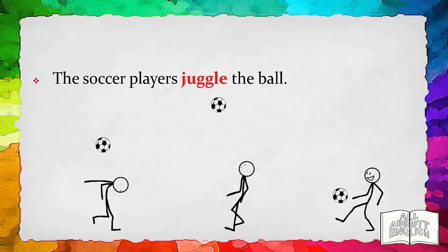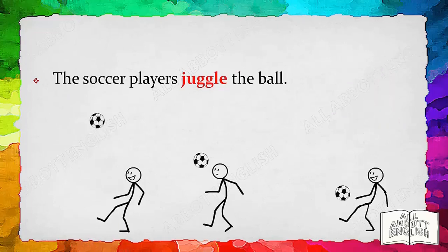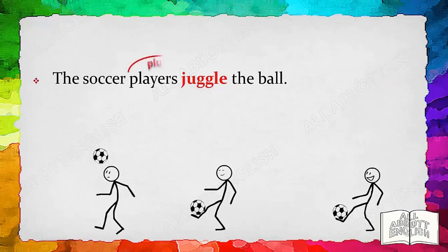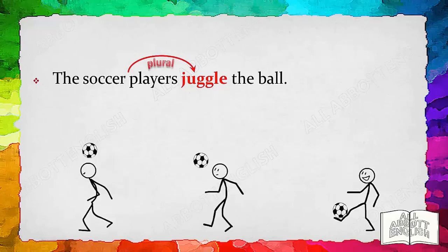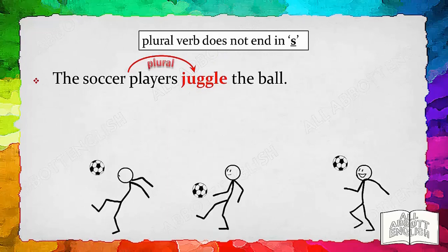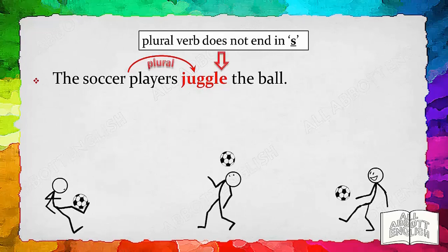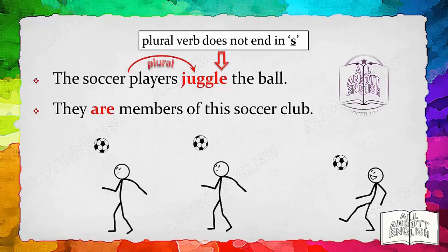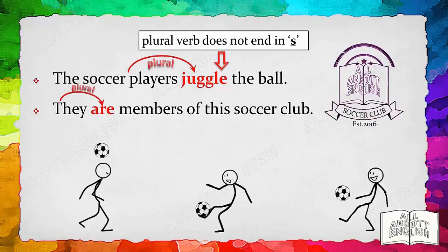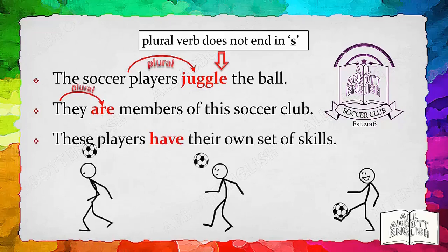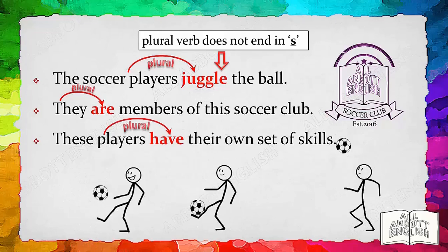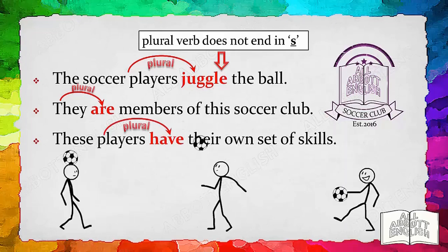If the subject is plural, it takes on a plural verb. 'The soccer players juggle the ball.' The plural subject 'the soccer players' requires a plural verb, 'juggle.' The plural verb 'juggle' does not end in S. 'They are members of the soccer club.' The plural subject 'they' takes on the plural verb 'are.' 'These players have their own set of skills.' The plural subject 'these players' is paired with the plural verb 'have.'